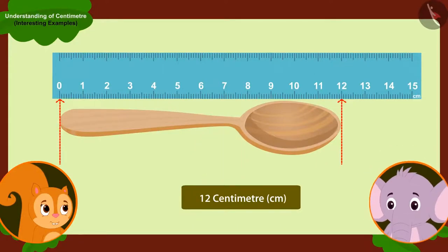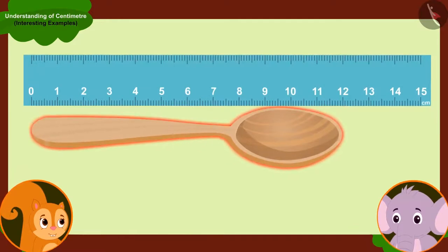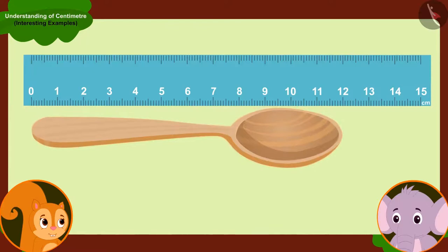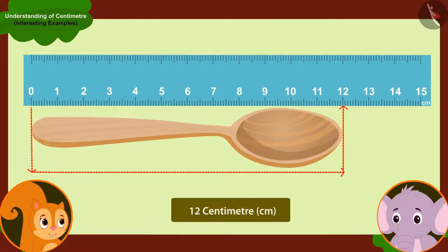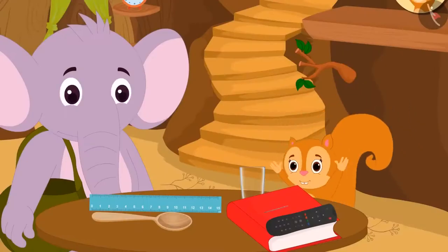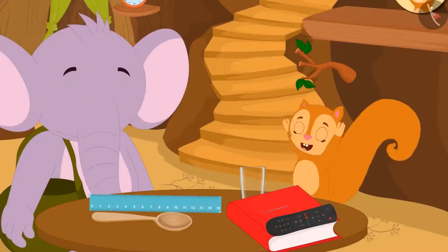Chanda could not understand how Appu found this out. Appu said to her, Whenever you have to measure the length of any object, you place it next to the ruler in this way and start measuring from zero. The number which is reaching the other end of your object, the length of your object will be that centimetre.